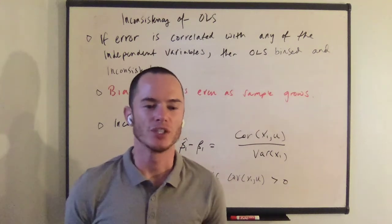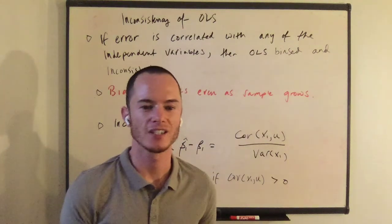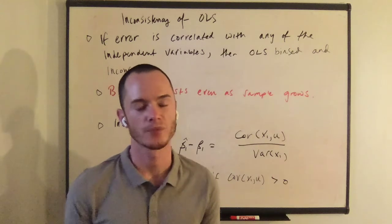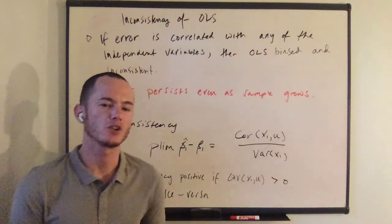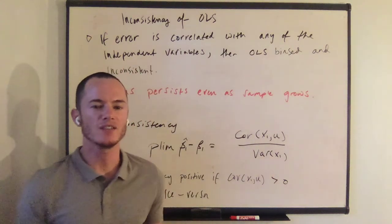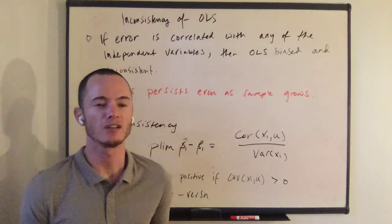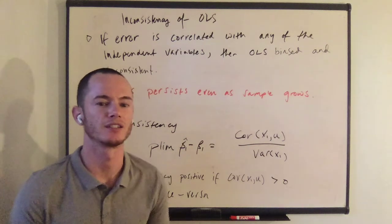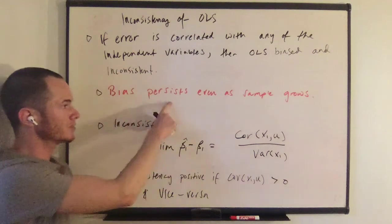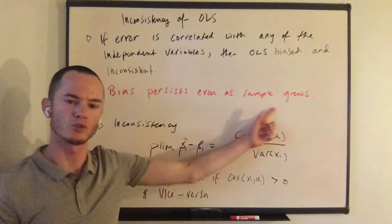Hi students, Professor Nugent here. In this video we're going to discuss the inconsistency of OLS. If the error term is correlated with any of the independent variables, then OLS is going to be biased and inconsistent, and we know that the bias persists even as the sample grows.